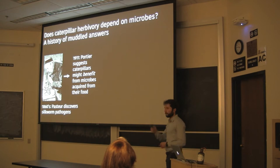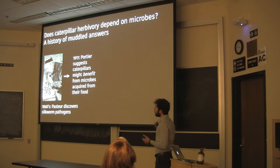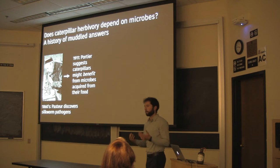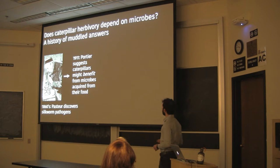In 1911, a French scientist named Portier had a new idea: maybe caterpillars actually benefit from microbes. He specifically suggested that caterpillars acquire bacteria and other microbes from their food — from the leaves they eat — and that those microbes colonize the gut and go on to help the host digest or detoxify plant material. But this has essentially remained a suggestion ever since.